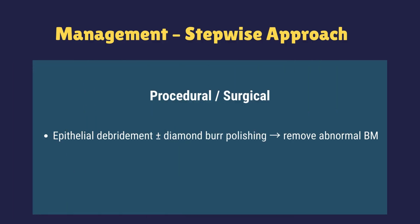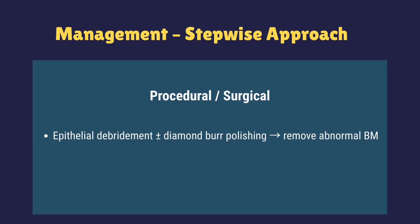Surgical options are considered when medical therapy isn't enough or when recurrent erosions significantly affect vision. First is epithelial debridement with or without diamond bur polishing — the abnormal multilaminar basement membrane is mechanically removed. A diamond bur smoothens the Bowman's layer and removes residual fragments, creating a clean surface for healthy epithelial cells to reattach.